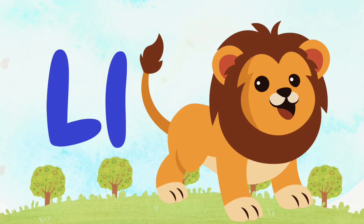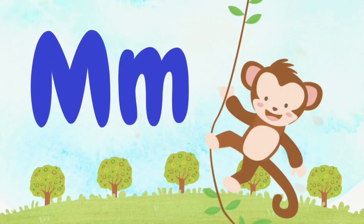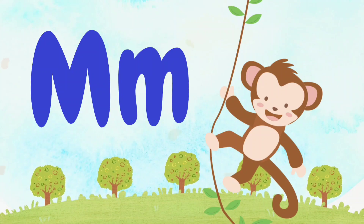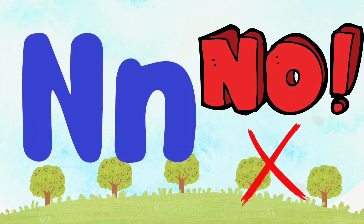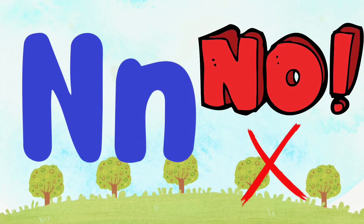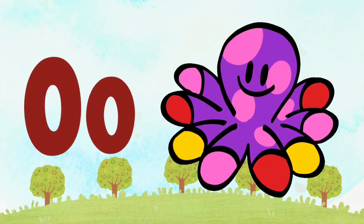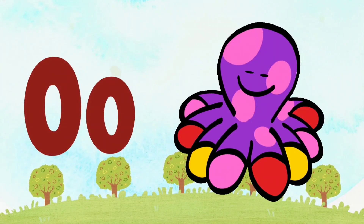M is for Monkey. M. M. Monkey. N is for N. N. N. O for Octopus. O. O. Octopus.